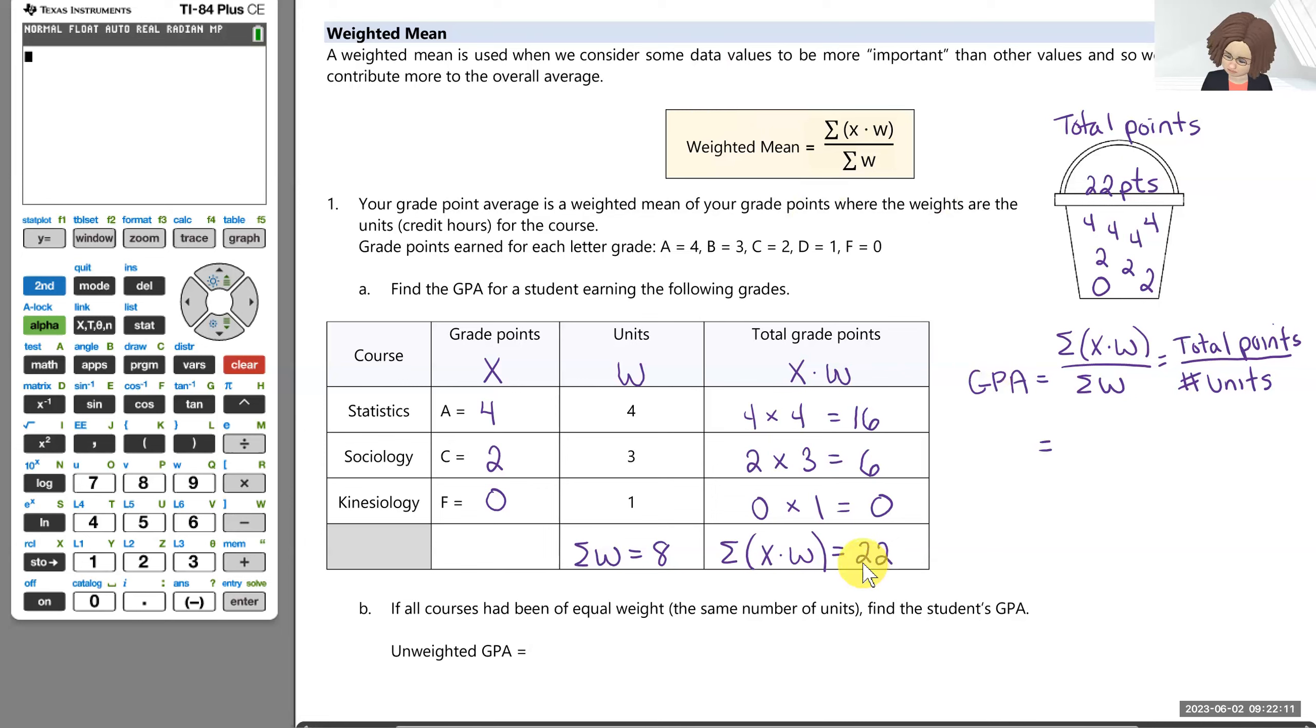So we have 22 points. We're going to divide that among eight units total. And 22 divided by eight is 2.75. And oftentimes GPAs are reported to two decimal places. So I'll leave that at 2.75. So for the student, a 2.75 overall GPA, so two and three. So that's somewhere between a two and a three. And that's somewhere between a C and a B. So sort of a high C getting closer to the B mark.